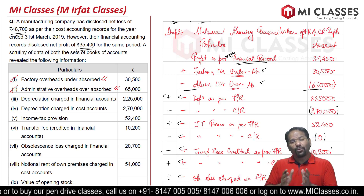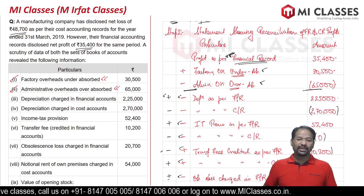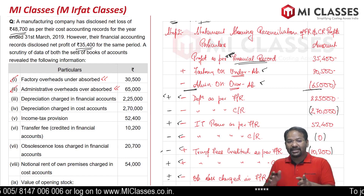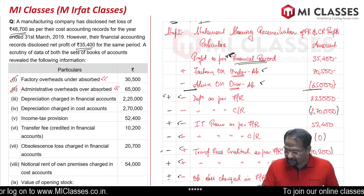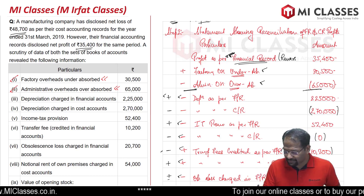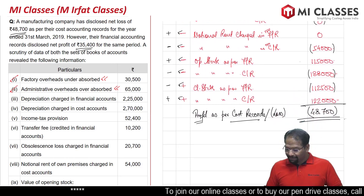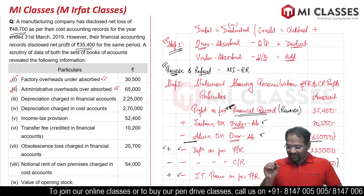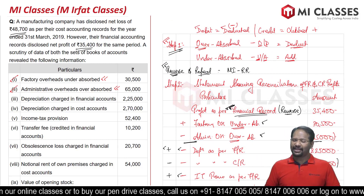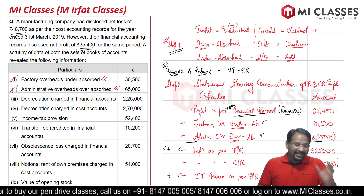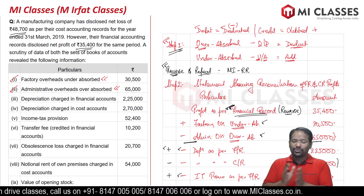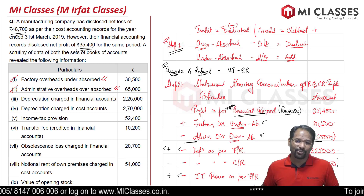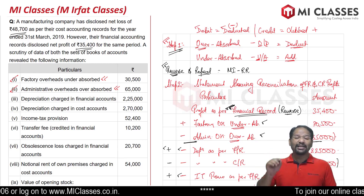You may ask: what if we had started from cost records and ended at financial records? Nothing changes in principle — in that case, we reverse as per cost records and repeat as per financial records. Whichever record you start from, you reverse that; whichever you end at, you repeat that. To make this sink in, practice this trick at least two to three times. Any complicated question — no matter how it tries to confuse you — this trick will give you the answer. That is guaranteed.